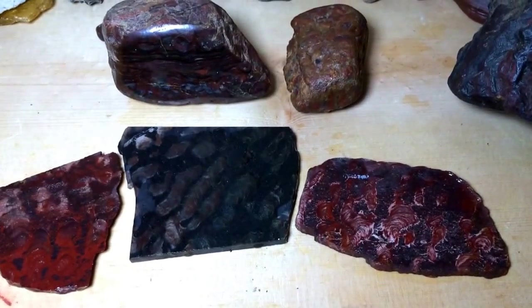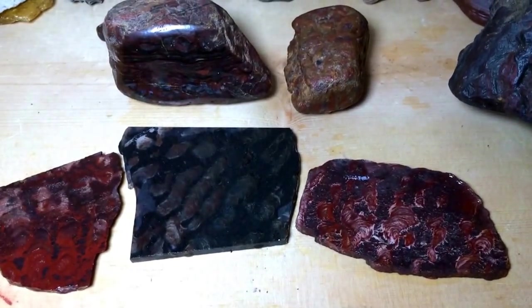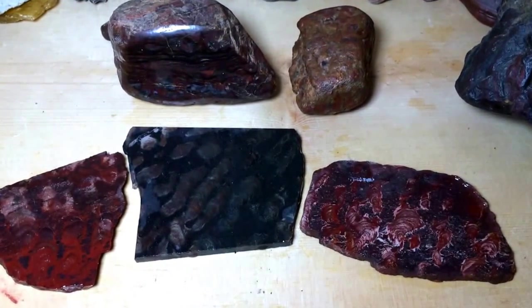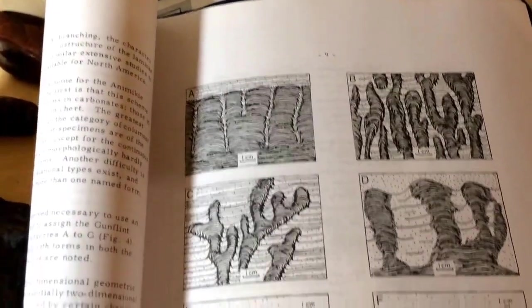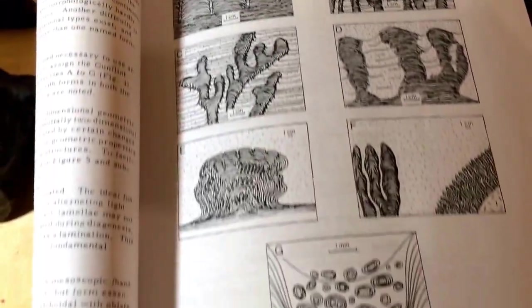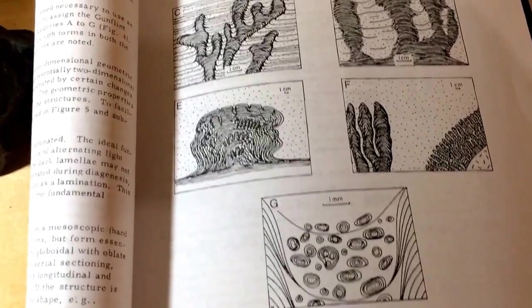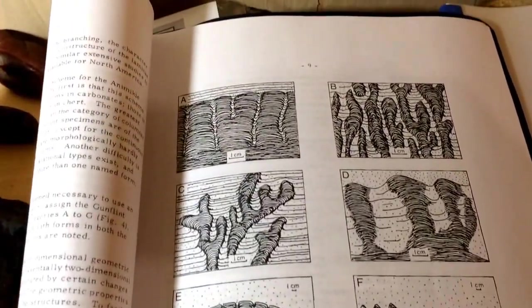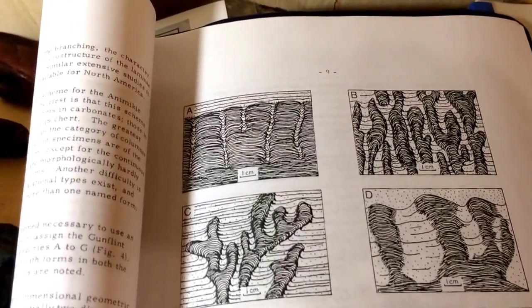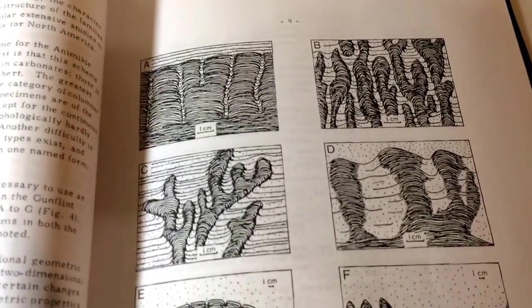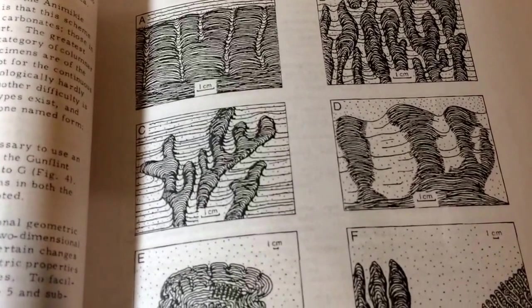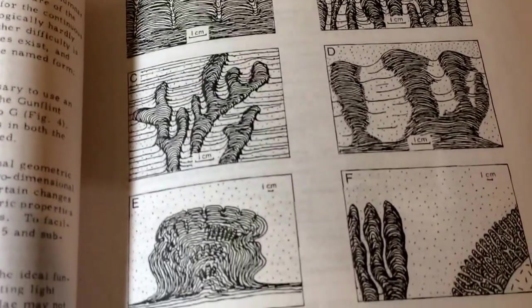I wanted to make a video of some of my Mary Ellen Jasper. It's a fossil stromatolite from the Iron Ranges in Minnesota and Canada. Here I've got a paper that shows some of the different forms of stromatolites. The stromatolites are not fossil bacteria — they are sediment that has taken on a shape caused by the bacteria gluing the sediment together to make these shapes.